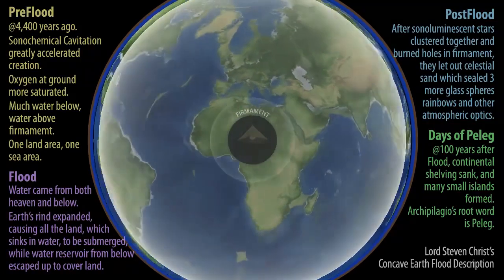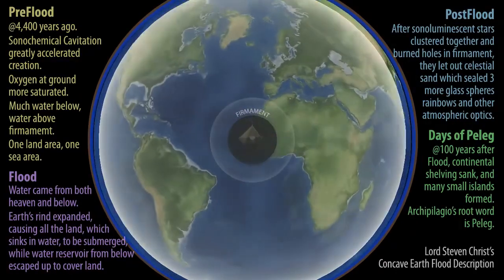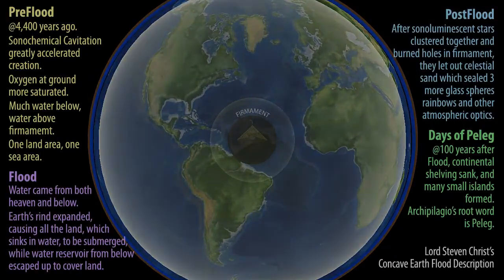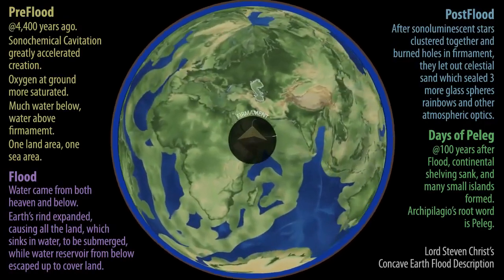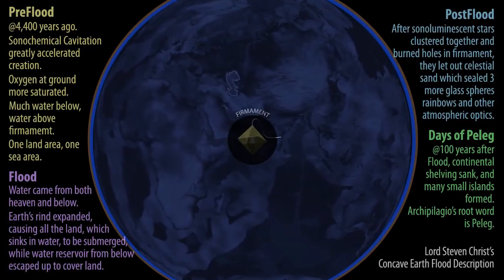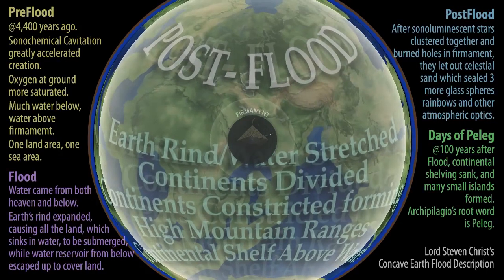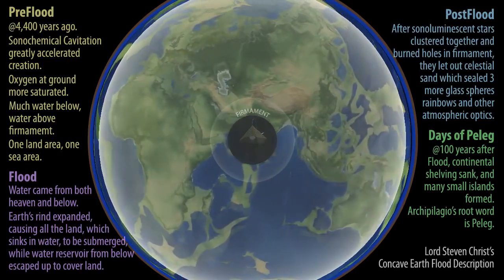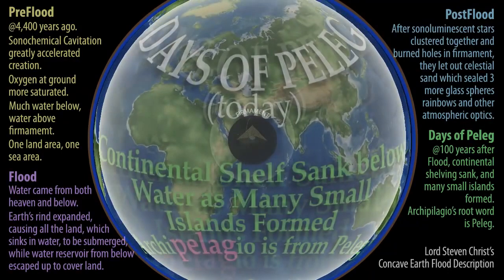Things happen so rapidly and exponentially, even now today — we're approaching the AI singularity. You cannot judge things like that, especially if something happened catastrophically. Sonochemical cavitation actually greatly accelerates the sonochemical process of things, accelerating the growth and the transition from one metal to another or one chemical to another. That's why we live in this so-called young earth — because things were accelerated like that. This is the only accurate depiction of how you're going to see what happened during the days of the flood.